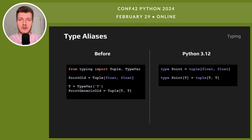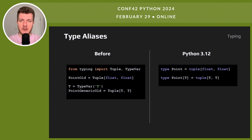PEP 695 also brings a new feature — type aliases. Now we can declare type aliases more easily, even with generics, using the new type statement. It makes our code hints cleaner and enhances their expressiveness. Before this update, defining aliases was more complex — we used TypeVar or directly assigning types. This new syntax simplifies the process, making our code more readable.